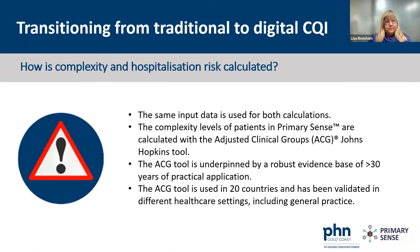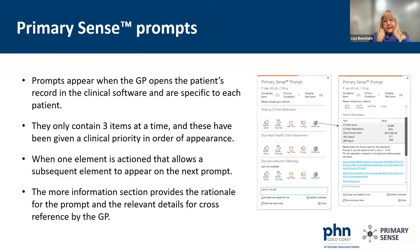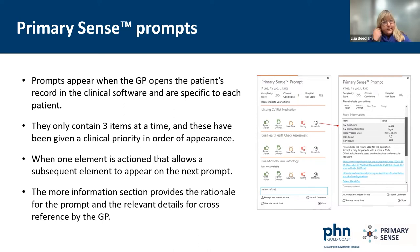The Primary Sense prompts appear when the patient is in front of the GP and as they open the patient's record — so before you call the patient in, the prompt will pop up. They've been designed to contain only three items at a time, given a clinical priority in order of appearance. When one element is actioned, a subsequent element can appear on the next prompt. The 'more information' section allows the GP to understand the rationale and links to appropriate resources.